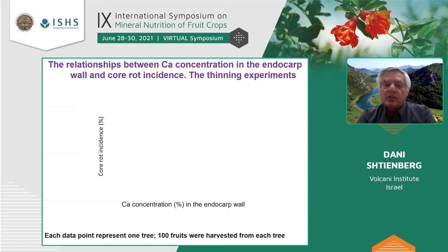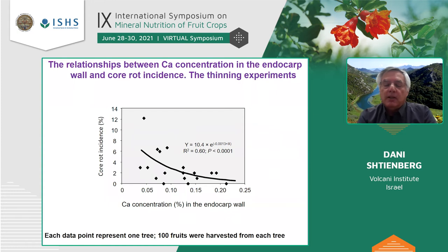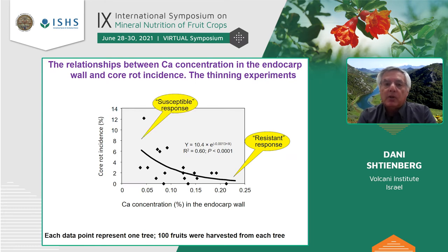Next, we examined the relationship between calcium concentration and core rot incidence. As expected, the graph shows that at low calcium concentration in the endocarp, core rot incidence is high, and high calcium concentration is followed by low core rot incidence — what we call resistant response versus susceptible response. Nevertheless, there is high variation in the data points, meaning the system is not as simple as described.